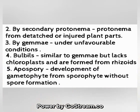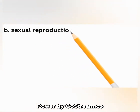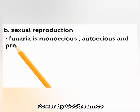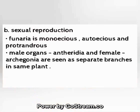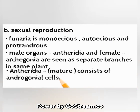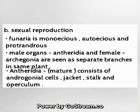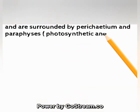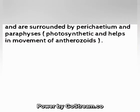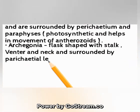Sexual reproduction: Funaria is monoecious, autoecious, and protandrous. Male organs (antheridia) and female organs (archegonia) are seen on separate branches on the same plant. The mature antheridium consists of androgonial cells, jacket, stalk, and operculum, and is surrounded by perichaetium and paraphyses. Archegonia are flask-shaped with stalk, venter, and neck.